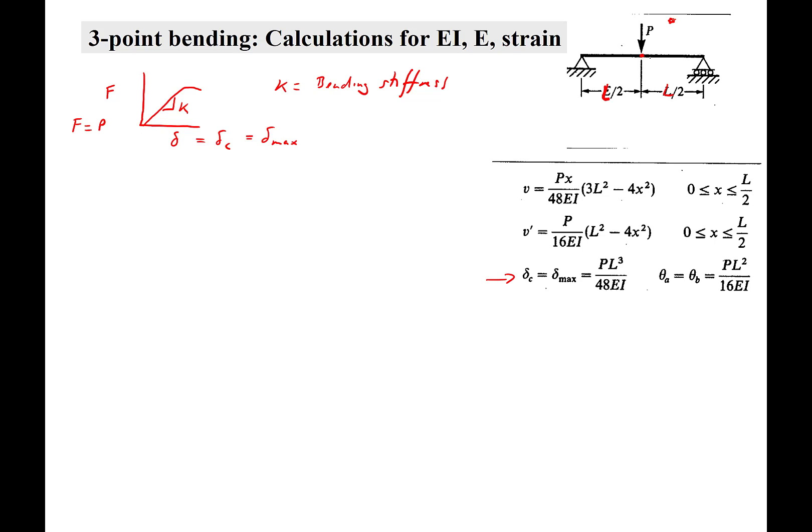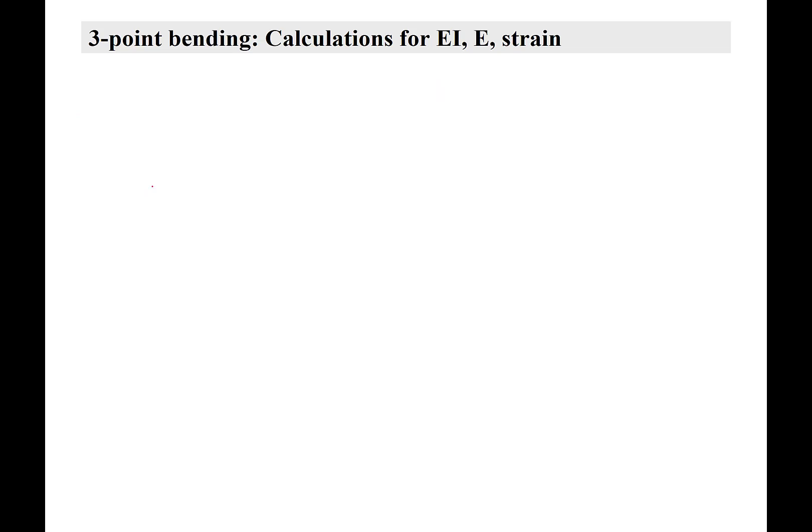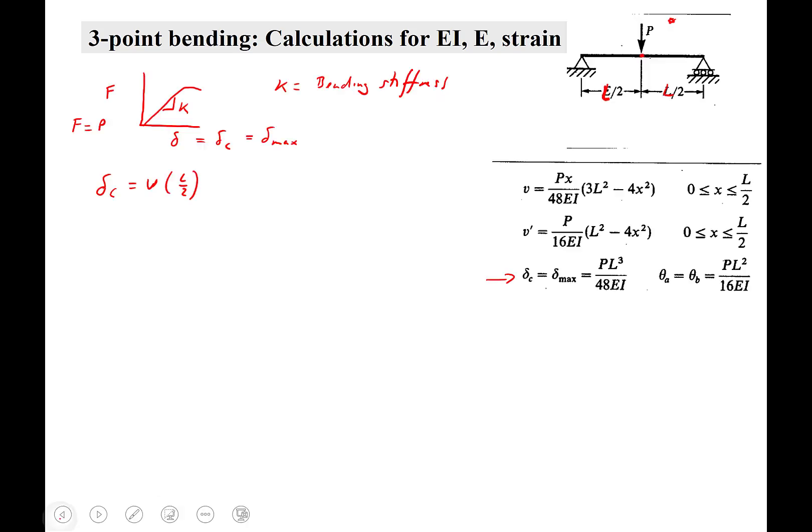So you can calculate what del C is. That is V at L over 2. And V is the displacement at any point in the beam. So when X equals L over 2, you have P L over 2 over 48EI.